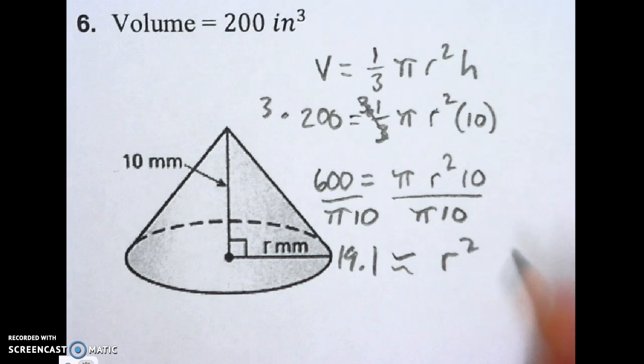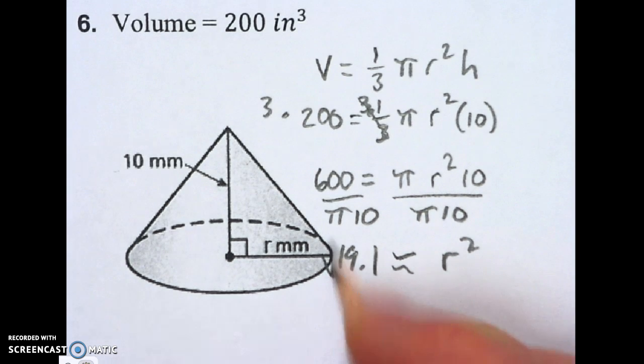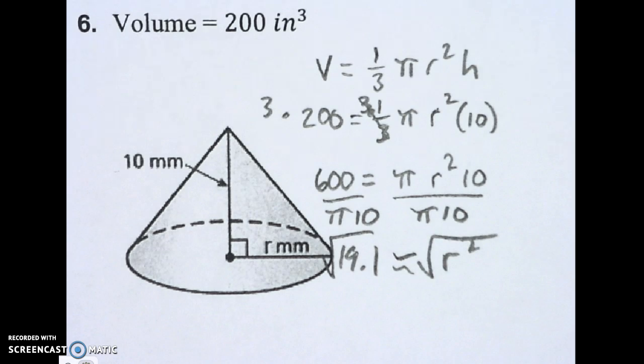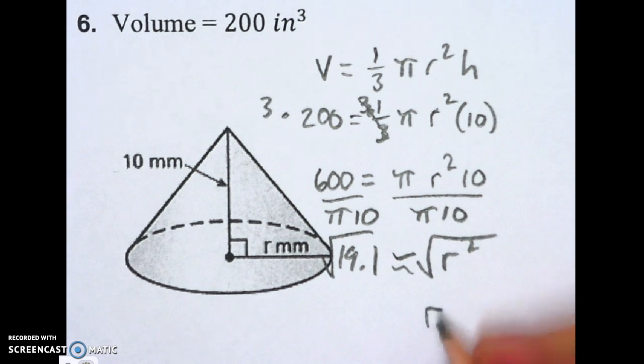And that equals r squared. That is not r. We need to take the square root in order to get the correct answer. And it's going to be about.